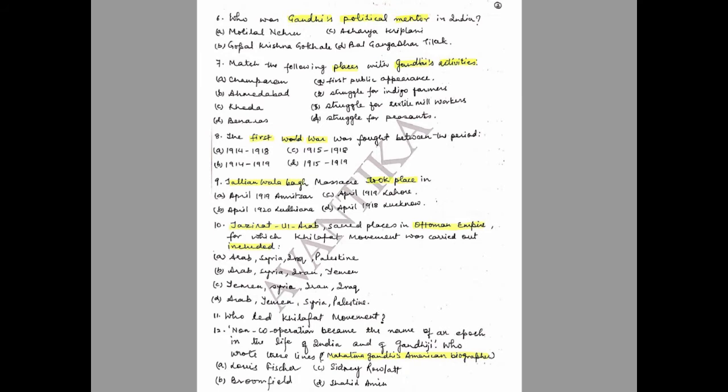Question 9: Jallianwala Bagh massacre took place — options: A) April 1919, Amritsar; B) April 1920, Ludhiana; C) April 1919, Lahore; D) April 1918, Lucknow. Choose the correct option.